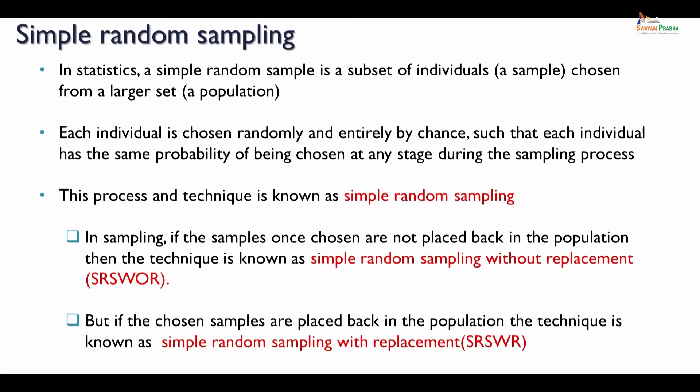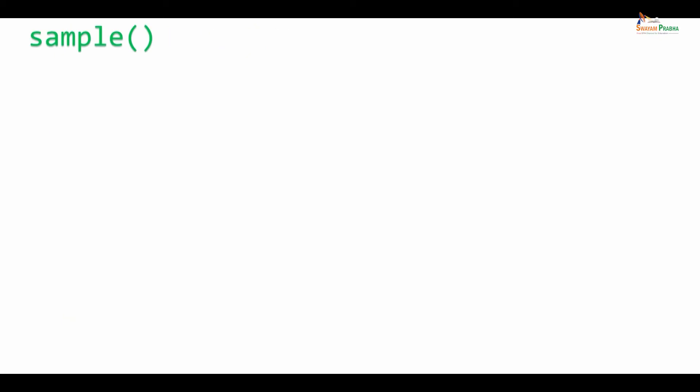Another technique is known as simple random sampling with replacement. If the chosen samples are placed back in the population, then the technique is known as simple random sampling with replacement. This is the difference between simple random sampling with replacement and without replacement.